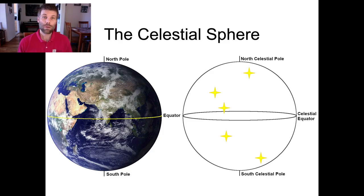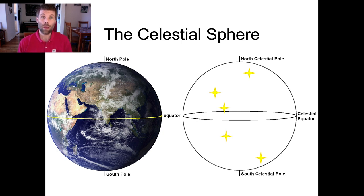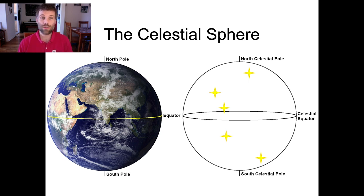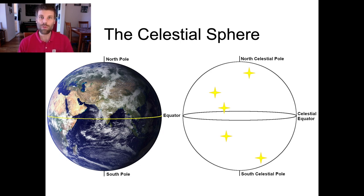We'll start out just talking about what the celestial sphere is. It's a way of visualizing the sky. It gives us a tool to provide reference points on the sky, and therefore to describe where on the sky a particular star is by setting out a system of coordinates, then visualizing how the appearance of the sky changes depending on where you are on the Earth, time of year, things like that.